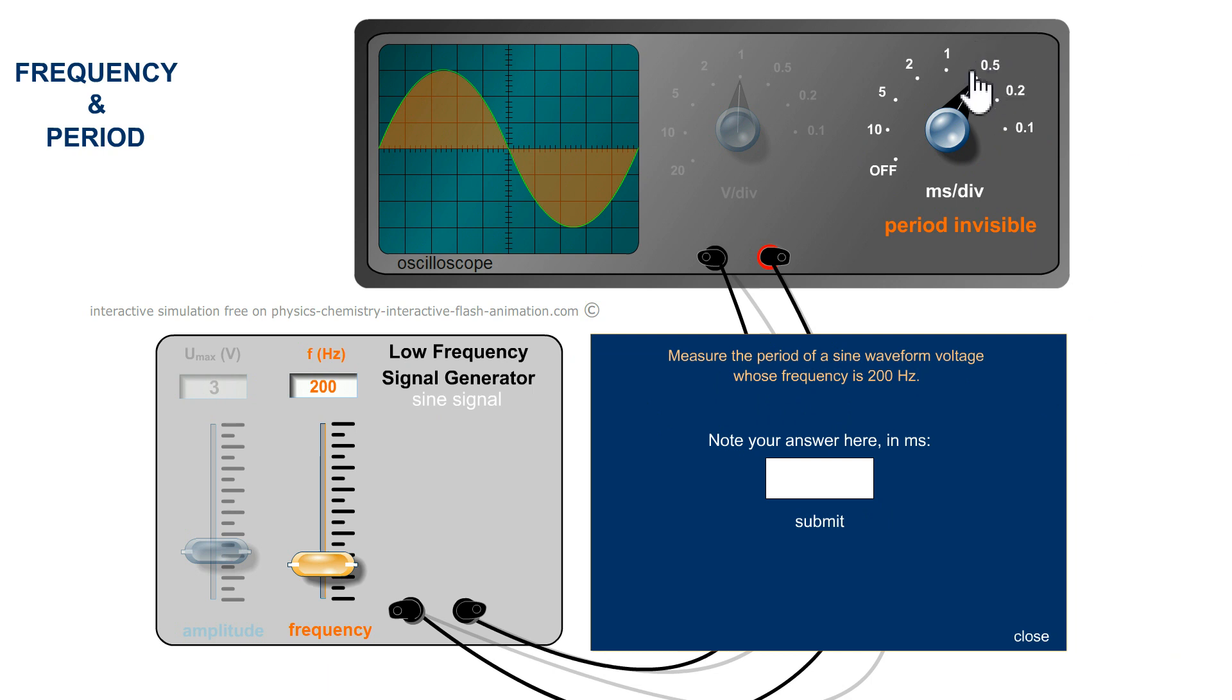So there, it will go quickly. It looks like what I did earlier. 0.5 milliseconds times ten, since there are ten divisions. It would be five milliseconds for the period. T equals five milliseconds.